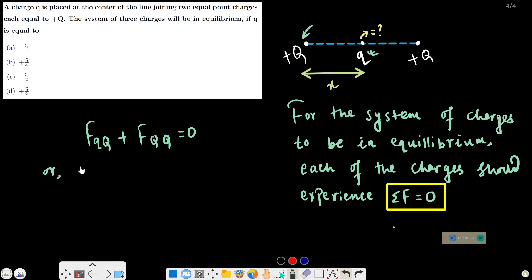Using the formula: k·q·Q by distance squared, plus k·q·Q by 2x squared, which gives k·q·Q by 4x squared, equals zero. So q is equal to Q by 4.